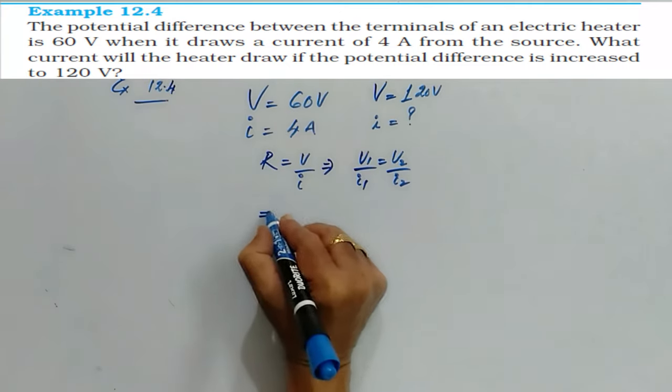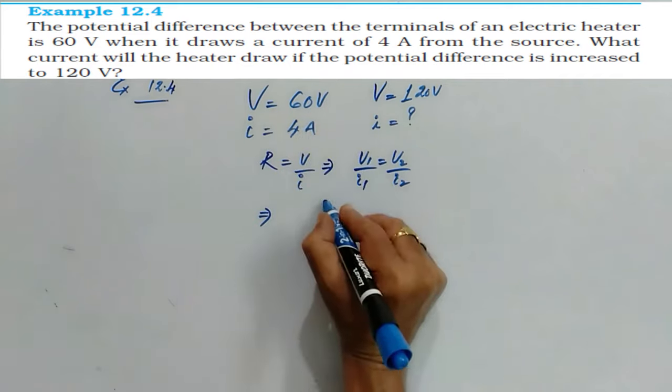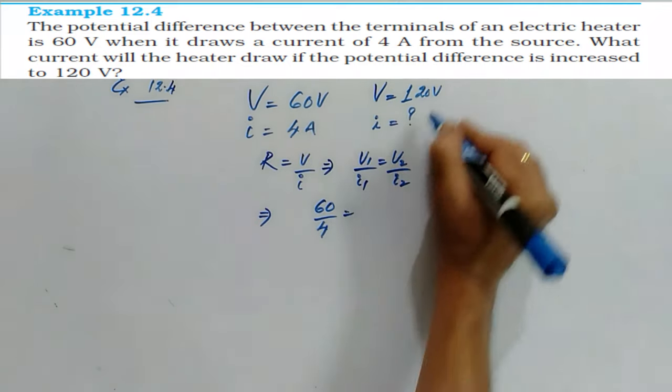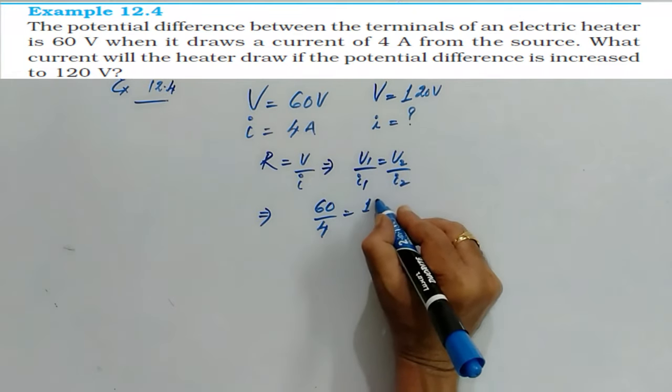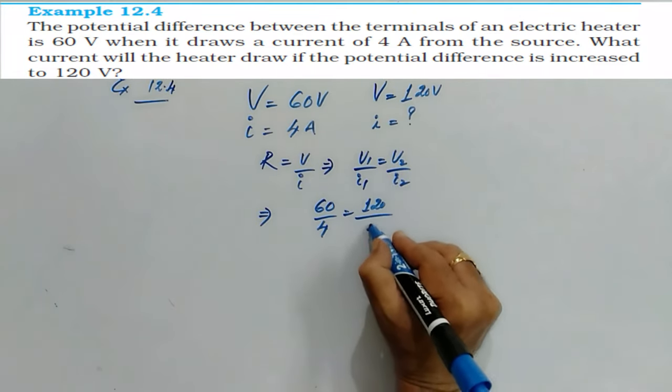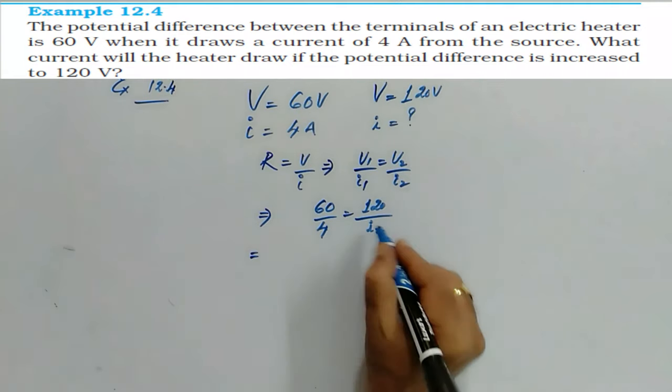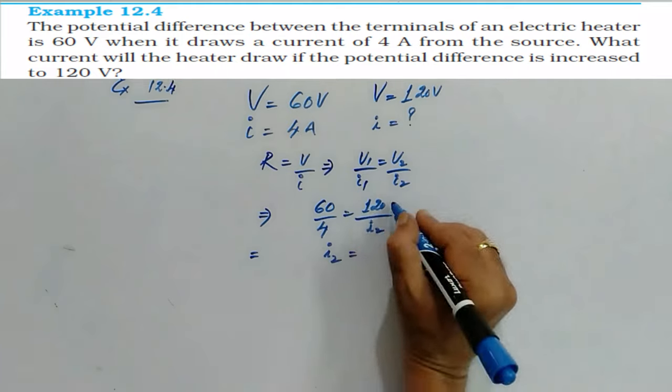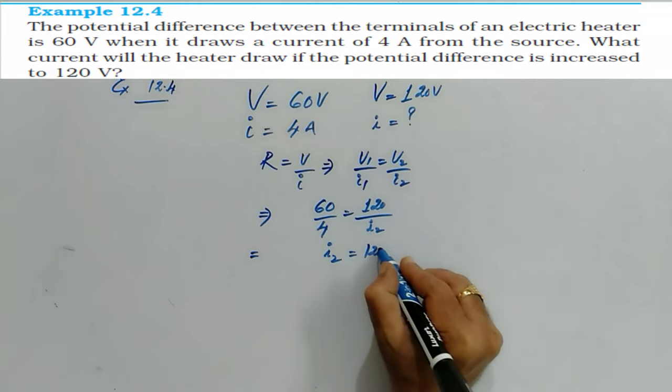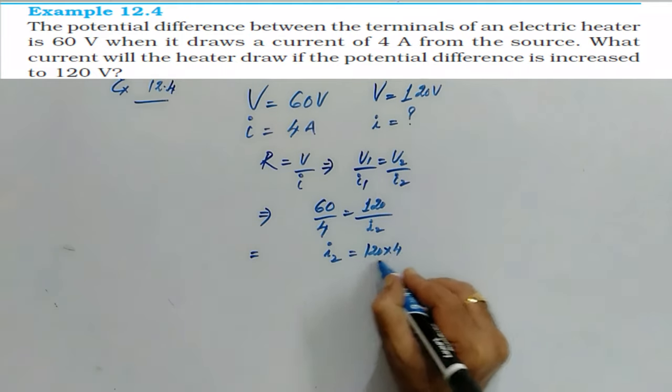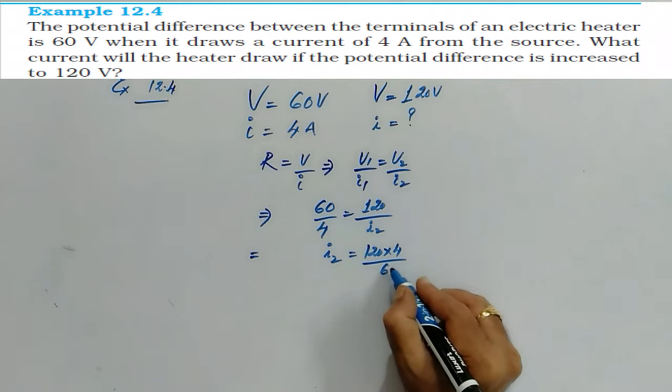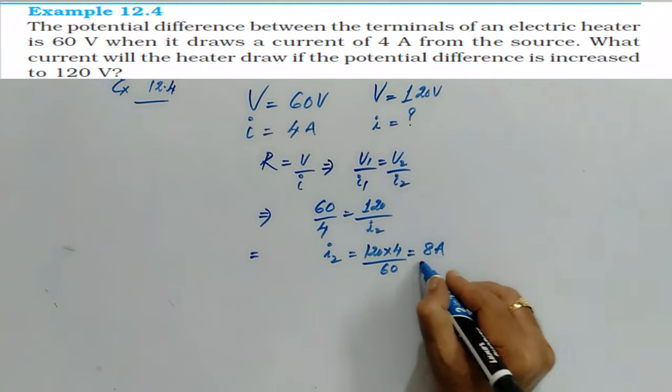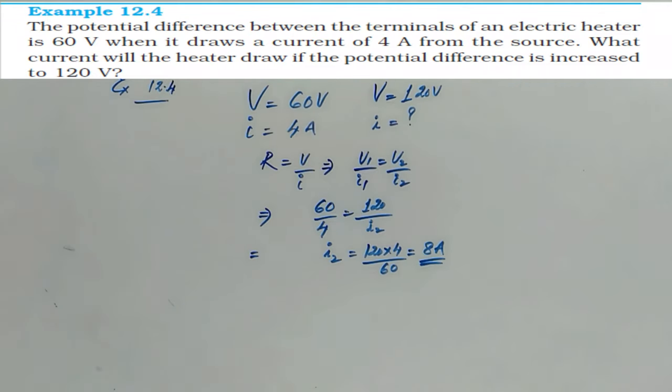What is V1? 60 by 4. What is V2? 120 by I2. So I2 is equal to 120 times 4 divided by 60, which gives you 8 amperes.